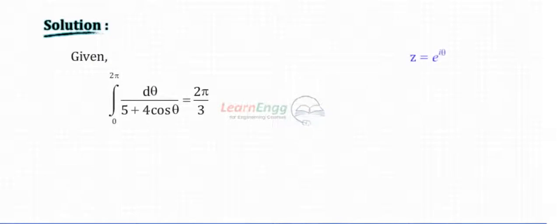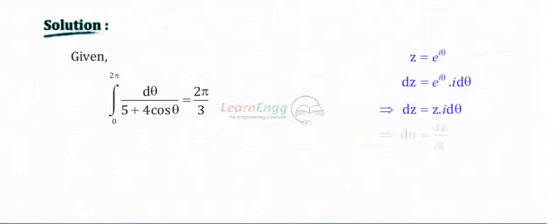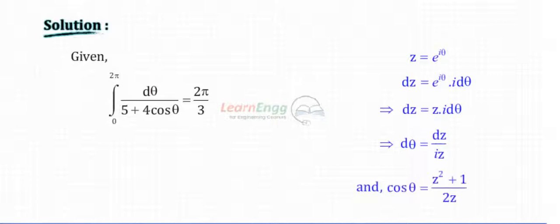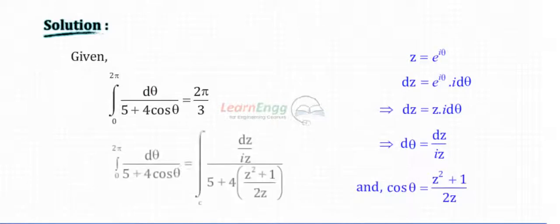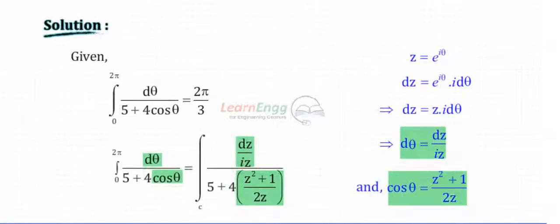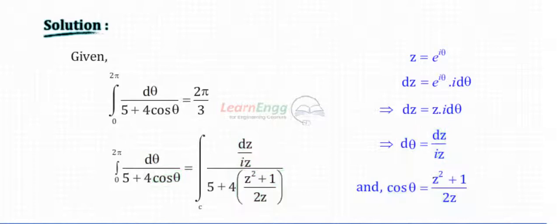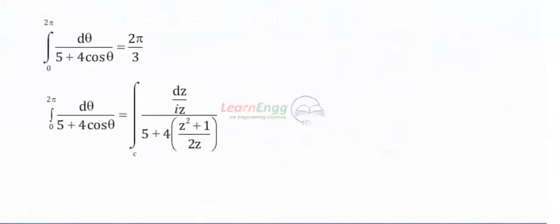We know that z is equal to e^(iθ). By simplifying and substituting the values, we get the transformed expression.